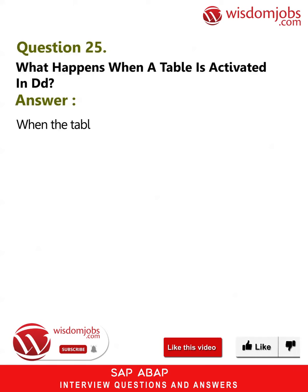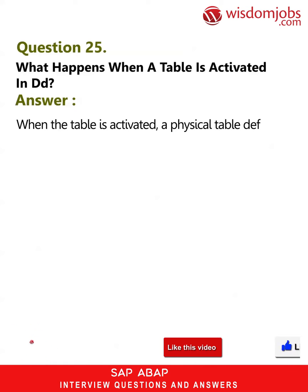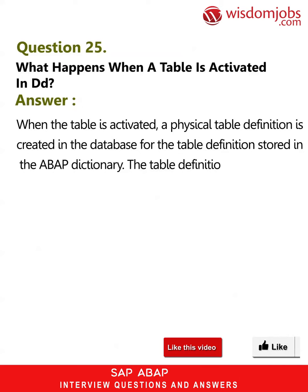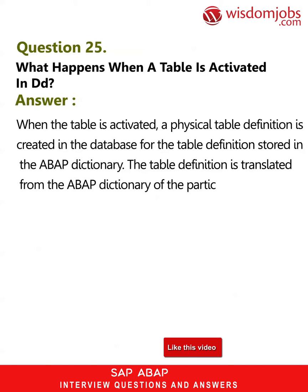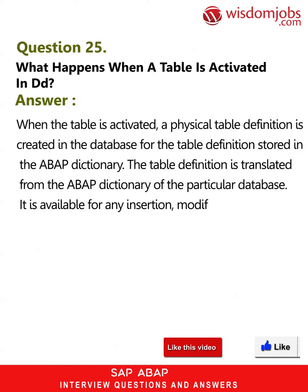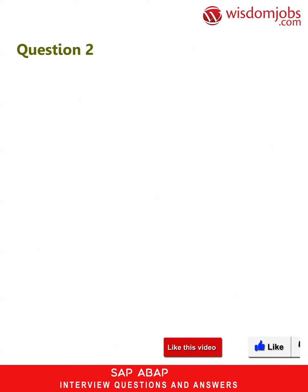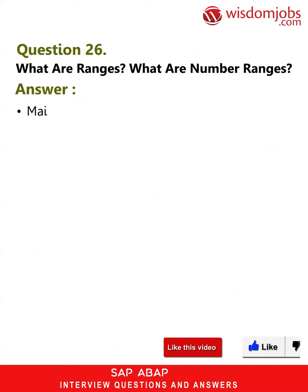Question 25: What happens when a table is activated in the ABAP data dictionary? When the table is activated, a physical table definition is created in the database for the table definition stored in the ABAP dictionary. The table definition is translated from the ABAP dictionary for the particular database, and it is then available for any insertion, modification, and update of records by any user.